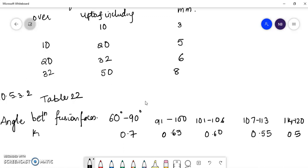So in a problem, when you are not given what is the angle that the fusion faces make, we consider the k value as 0.7.